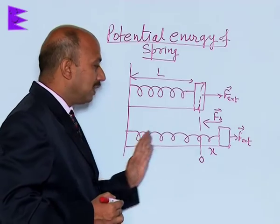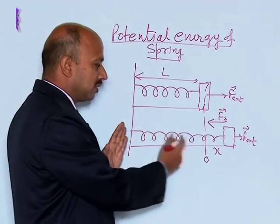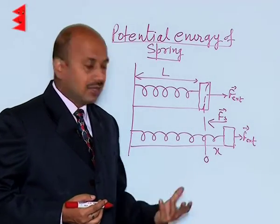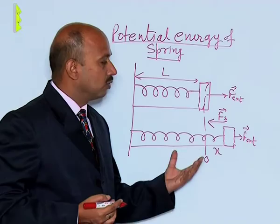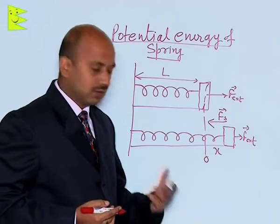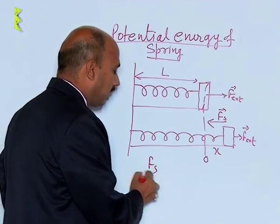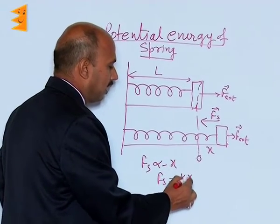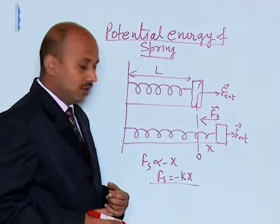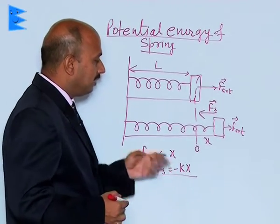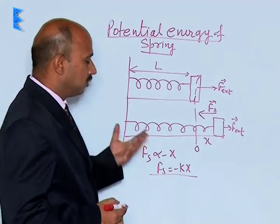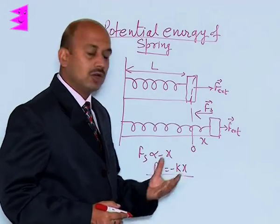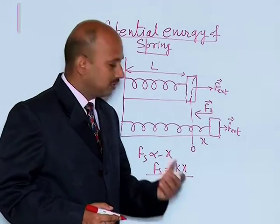When you compress the spring, an external force is applied to one side and the restoring force acts to the other side. In that case also, the spring force is opposite to the displacement. So we can write that spring force Fs is proportional to minus x, giving us Fs = −kx. Here the negative sign shows it acts towards the equilibrium or mean position, and x is the displacement — that is, the extension or compression of the spring.